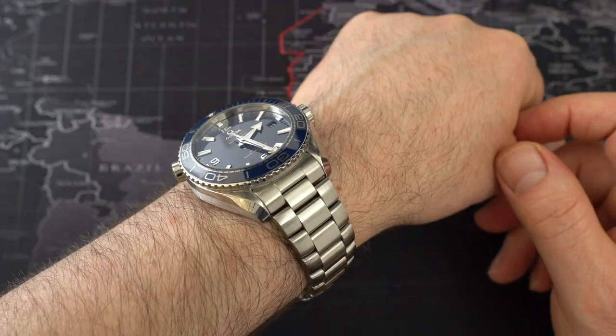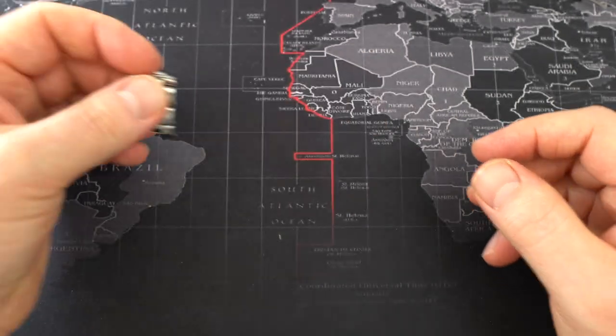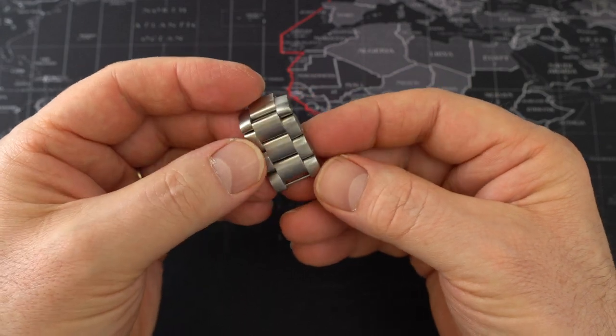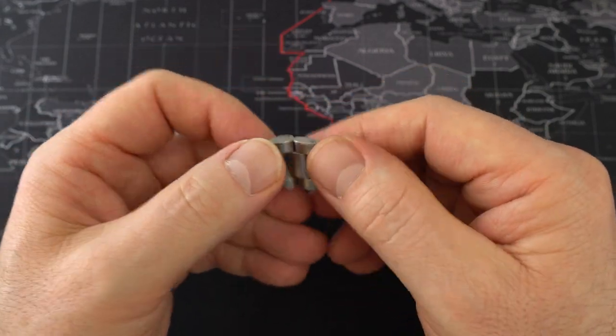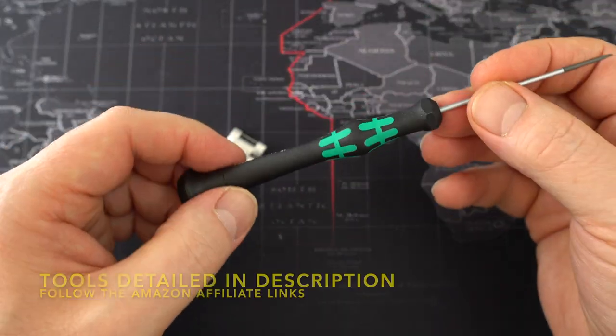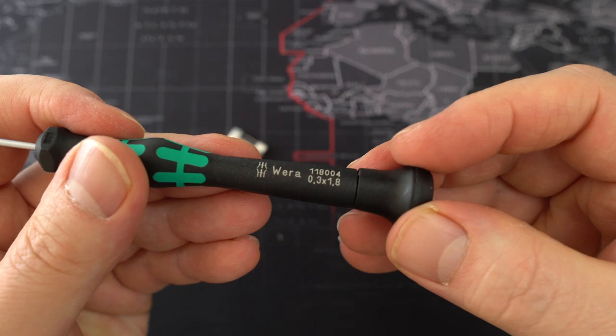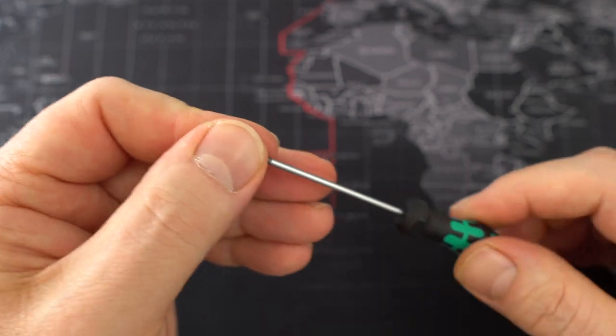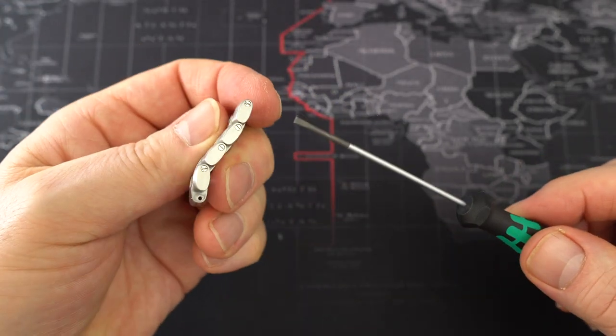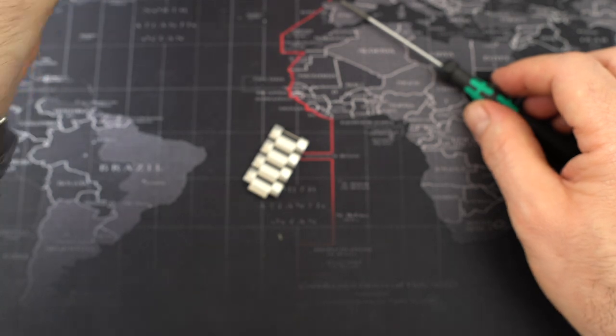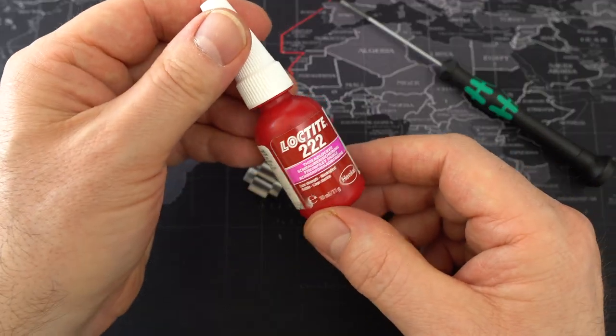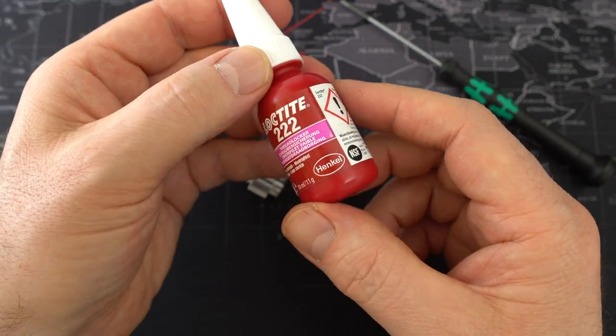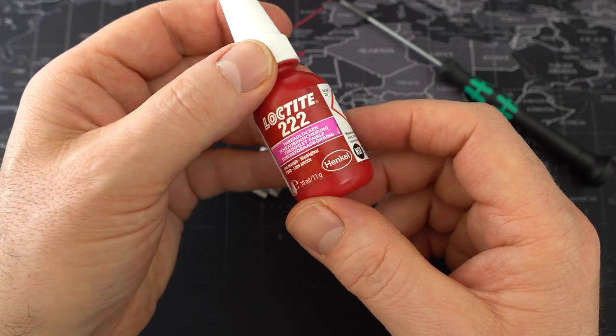Now if you still find you need to add or remove links, I'm going to practice on these links here. For my six and three quarter inch wrist I've removed one, two, three, four links. I'm going to use this screwdriver here which is a 0.3 by 1.8, so 1.8 being across the head of the screwdriver, and that fits just nicely into the screws on this link. We're also going to use some Loctite 222. This is a low strength Loctite and it'll stop me from over tightening your screws and make sure they don't fall out. Okay so let's get started.